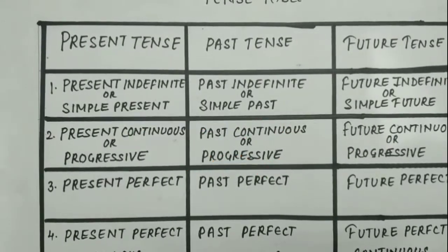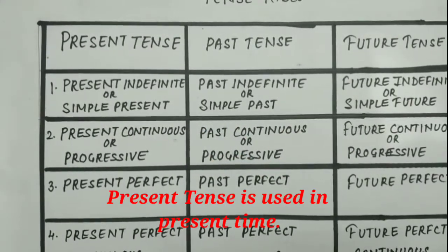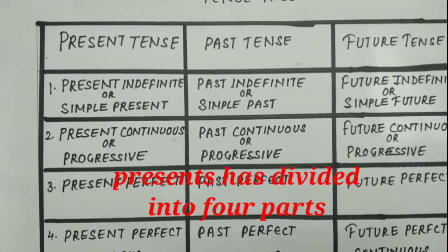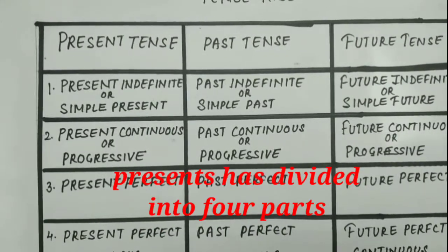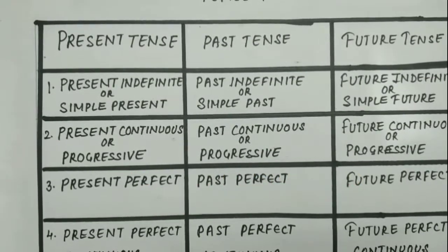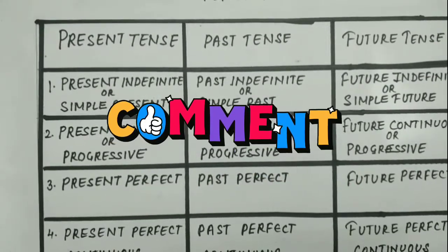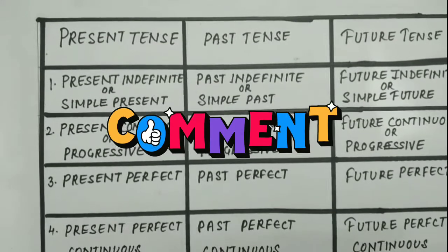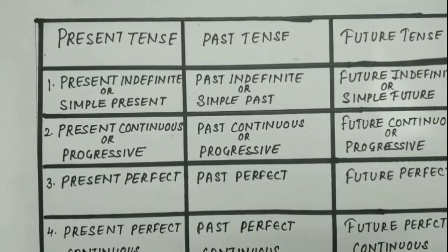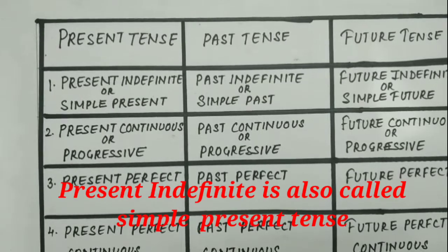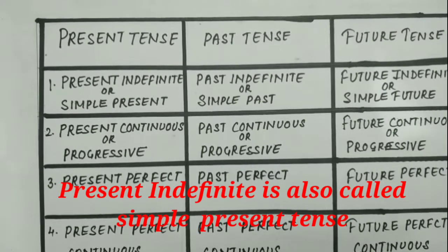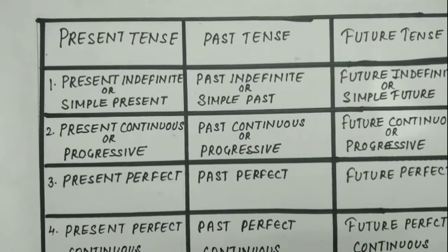Word maan samayi mein chal raha — tense jo hotte hain voh present tense hotte hain. Present tense ke parts hotte hain, chare parts hotte hain. Present tense ke part bata de hain, phir past aur future batayenge. Present tense mein chare parts hotte hain. Sabse pehela tense jo hotte hain — present indefinite tense hotte hain. Isko hum simple present tense bhi kehate hain.